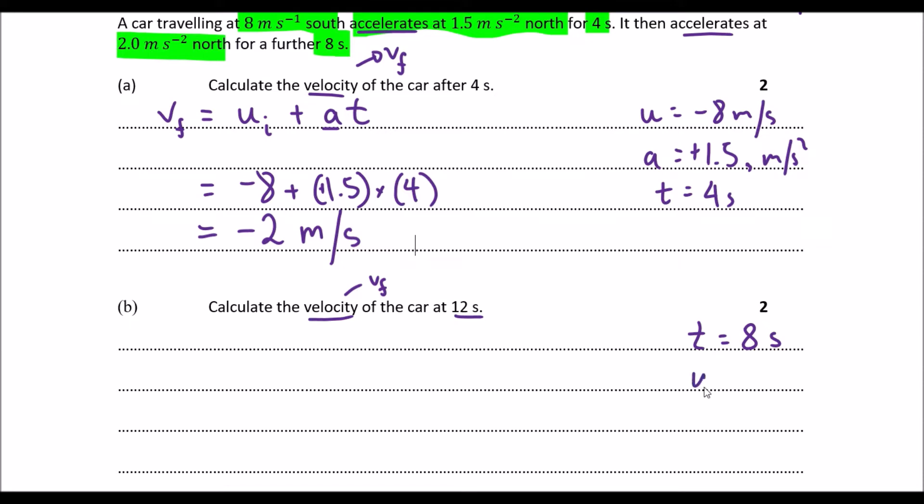We know what the initial velocity is. It's negative 2 meters per second. That was the velocity we reach before we do our second acceleration. And obviously our acceleration is positive 2 meters per second squared. Again, I'm going to write out my formula.